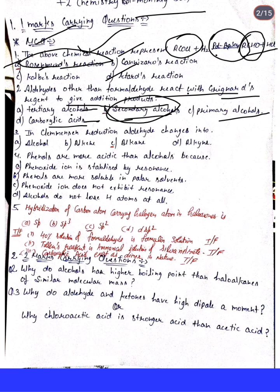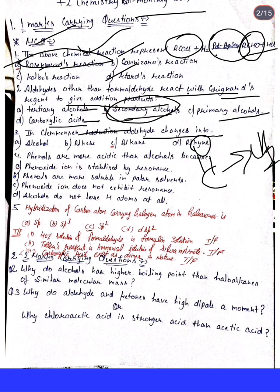Next question: in Clemmensen reduction reaction, the aldehyde or keto group changes into what? Options are: (a) alcohol, (b) alkene, (c) alkane, (d) alkane. The correct answer is alkane — the carbonyl group CH2 is reduced to an alkane.